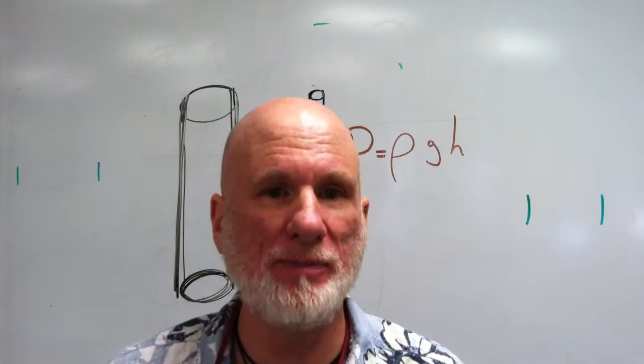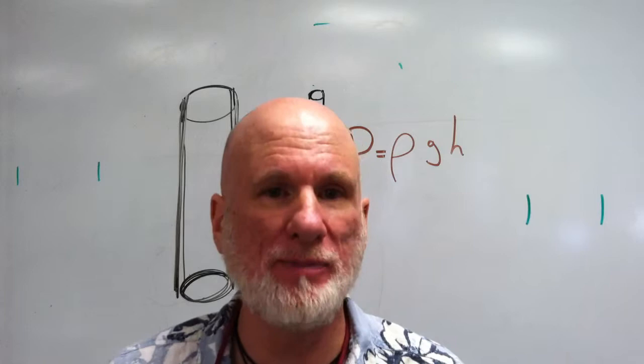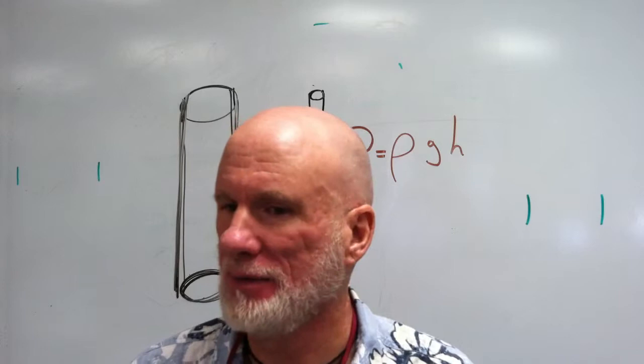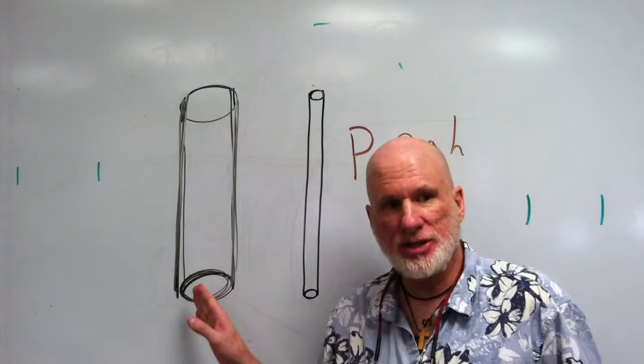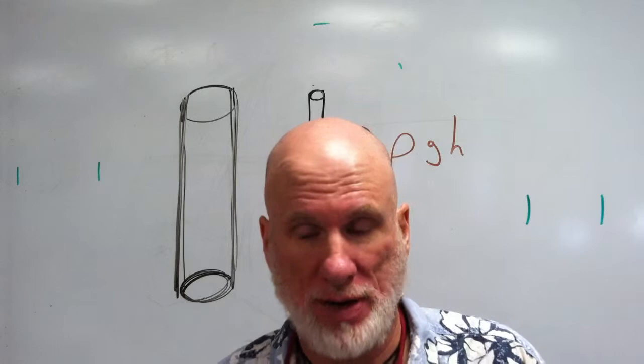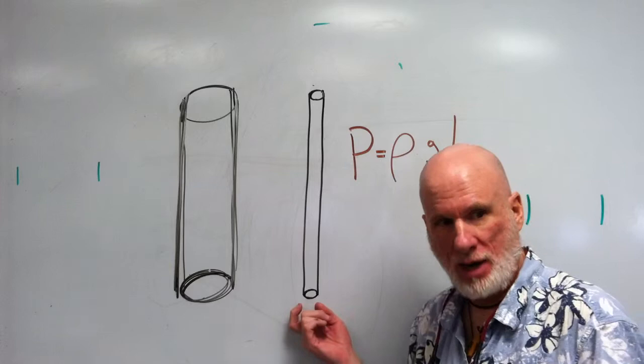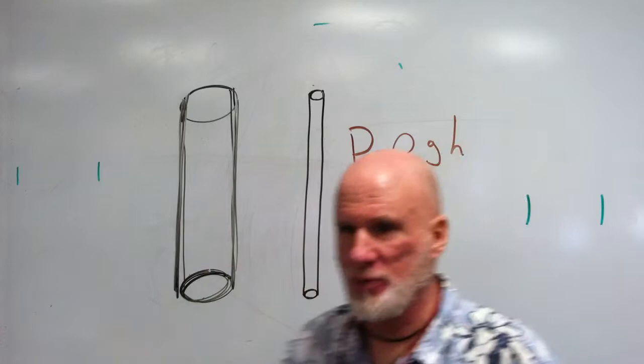One barometer tube has twice the cross-sectional area of another. So this tube has a much larger cross-sectional area. This is large cross-sectional area, this is small cross-sectional area. Same fluid inside, let's say they're both mercury barometers.